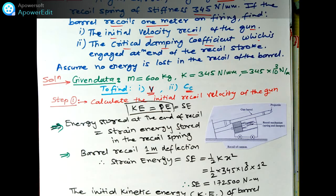This is equation 2 and the strain energy is equation 1. Setting them equal: 300 × v² = 172,500, so v² = 172,500 / 300. Therefore v = 23.9792 meter per second. This is the initial recoil velocity.